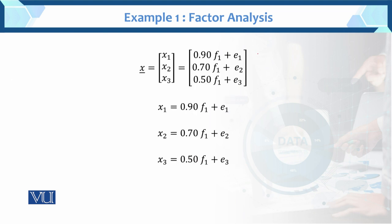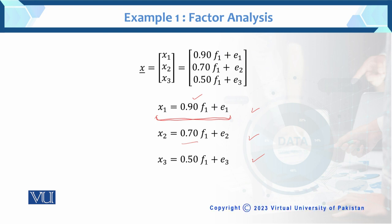These are x1, x2, x3 values. x1 = 0.9*F1 + e1 indicates a strong correlation (0.9) between the factor and variable x1. x2 has a high correlation of 0.7 between the factor and variable x2. And x3 has a moderate correlation of 0.5 between factor 1 and variable 3. This is the interpretation of example 1 of factor analysis, which can be solved as a one-factor solution manually.